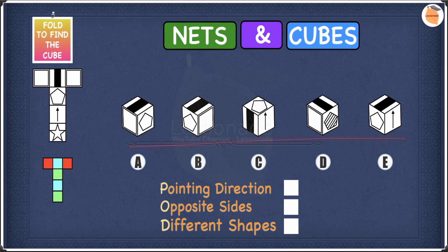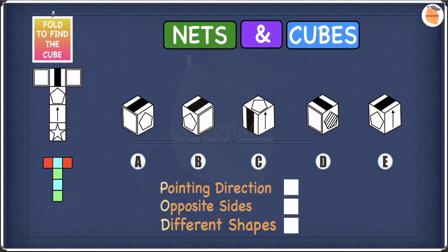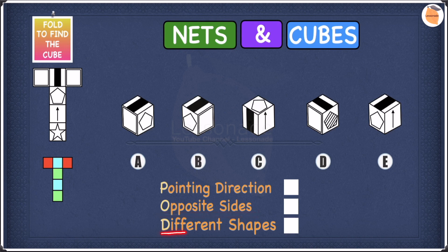In this example we're going to see which one of these cubes can be made from the net — this is a nets-to-cubes example. For this example we're going to use POD to help us: P stands for pointing direction, O stands for opposite sides, and D stands for different shapes.